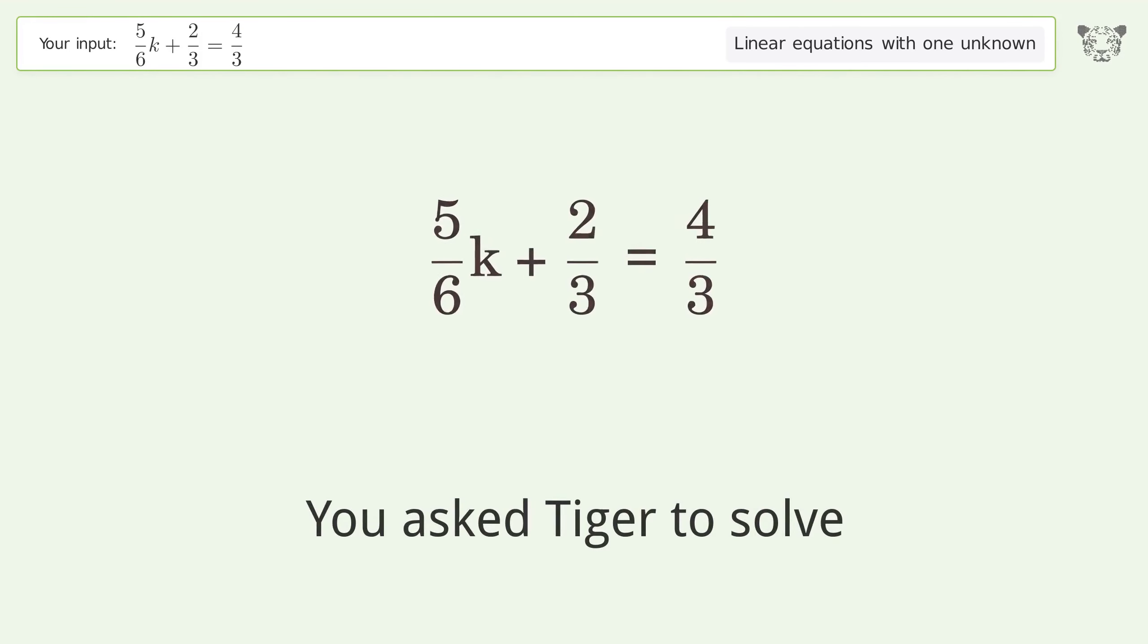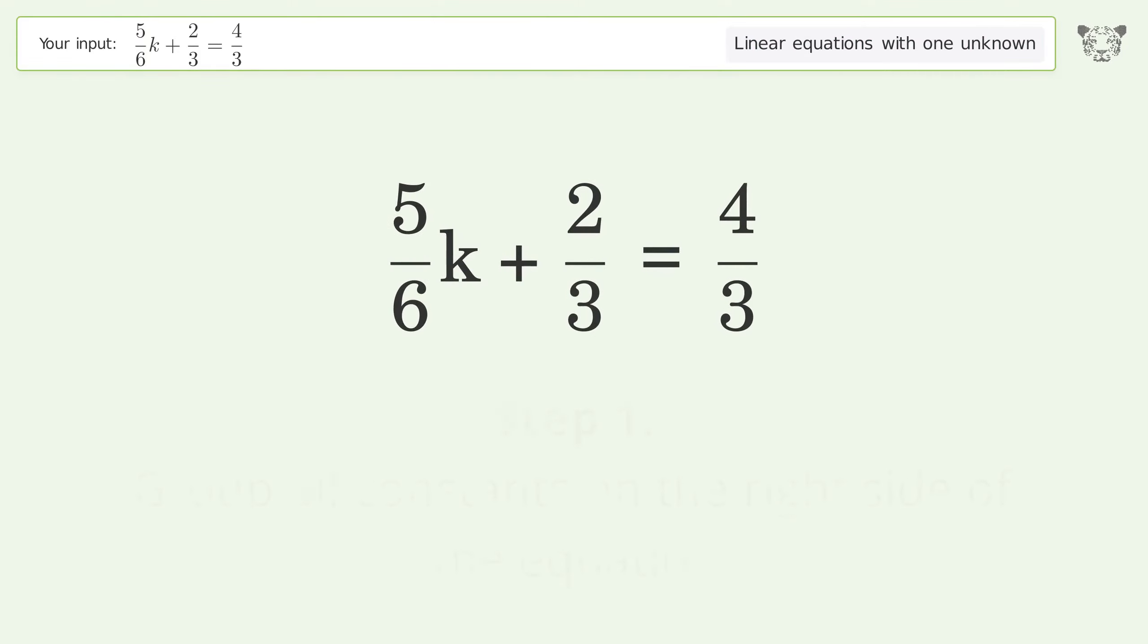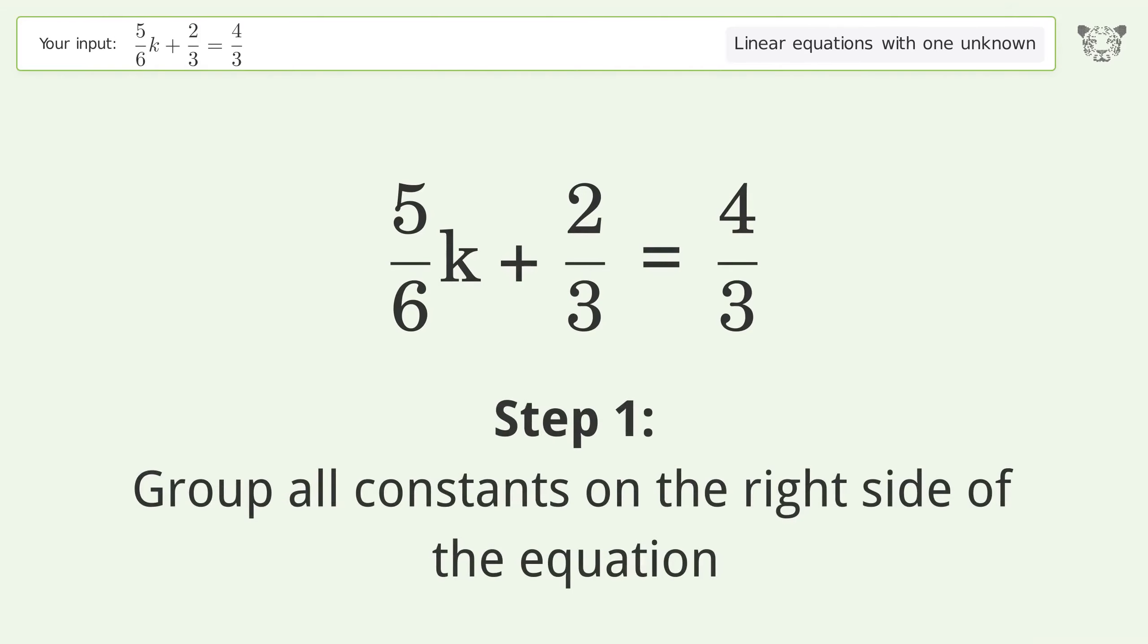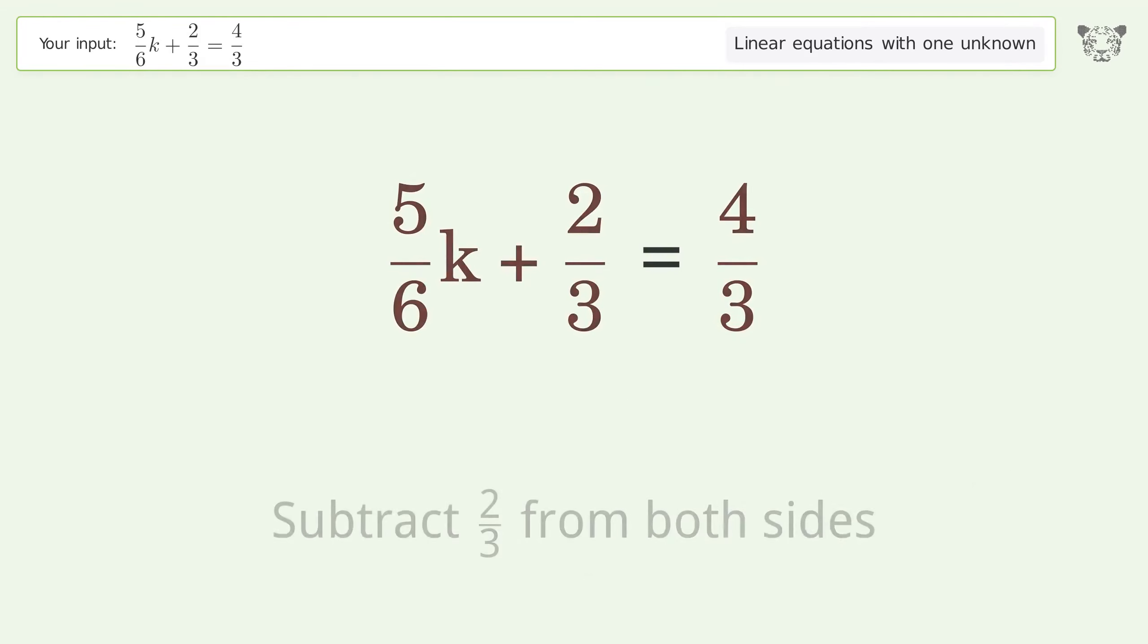You ask Tiger to solve this, which deals with linear equations with one unknown. The final result is k equals 4 over 5. Let's solve it step by step. Group all constants on the right side of the equation. Subtract 2 over 3 from both sides.